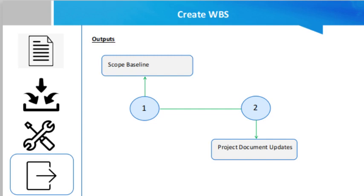The first output is the scope baseline, which is the approved version of a scope statement, the Work Breakdown Structure, and its associated WBS dictionary. This can be changed only through formal change control procedures and is used as a basis for comparison. Project document updates are another output — these may include requirements documentation, which may need to be updated if approved change requests result from the Create WBS process.